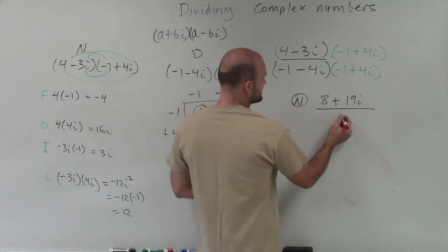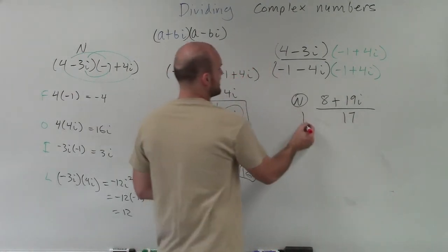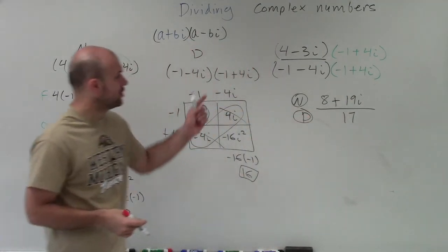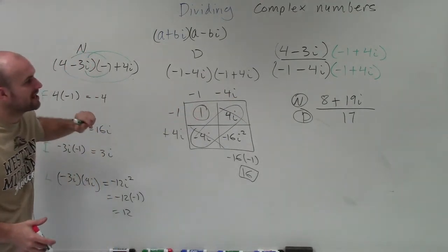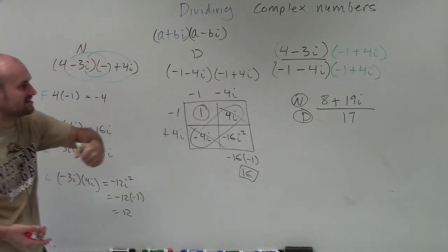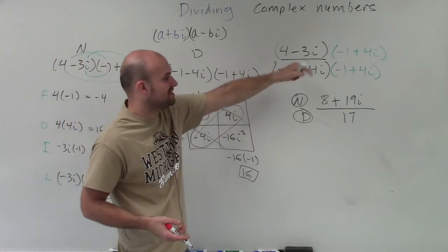which is going to leave me with a positive 17 as my new denominator. So by multiplying the two products of my numerator, I got 18 plus 19i, or 8 plus 19i. By multiplying these two products, I get 17.